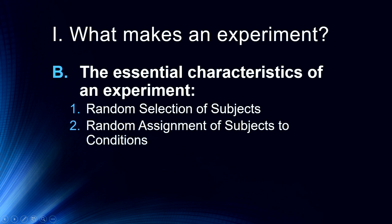We always randomly assign subjects to conditions. It's very important that we randomly assign subjects in drug trials because we want to make sure that we aren't biasing those drug trials by assigning certain individuals to certain conditions. For example, we might assign someone we think is more likely to benefit from a drug to a drug condition rather than a placebo condition. We want to make sure that any individual subject differences are randomly distributed throughout the experiment.